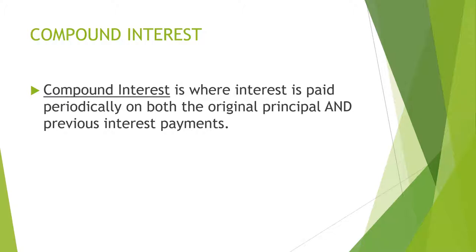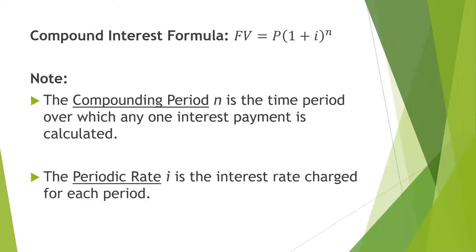So let's talk about what compound interest is. Compound interest is the most common type of loan that you're going to receive. It's where interest is paid periodically on both the original principal and on your previous interest payments. Probably where you're going to find compound interest is in a credit card that you get from maybe a department store, or those credit cards that you get advertisements for in the mail. Those are most likely going to be compound interest type loans.